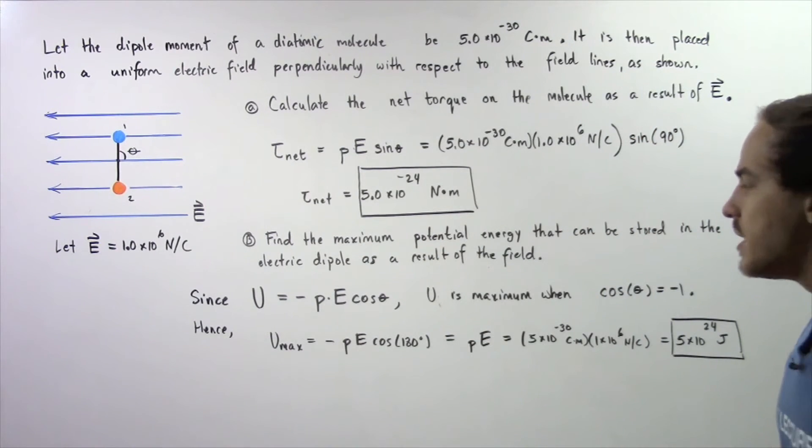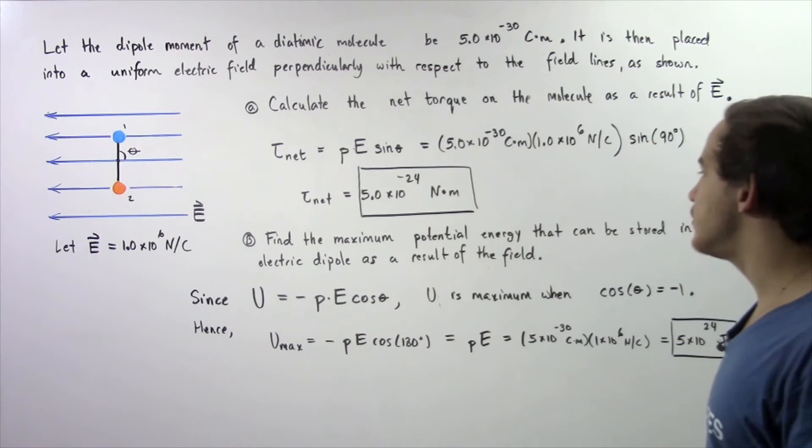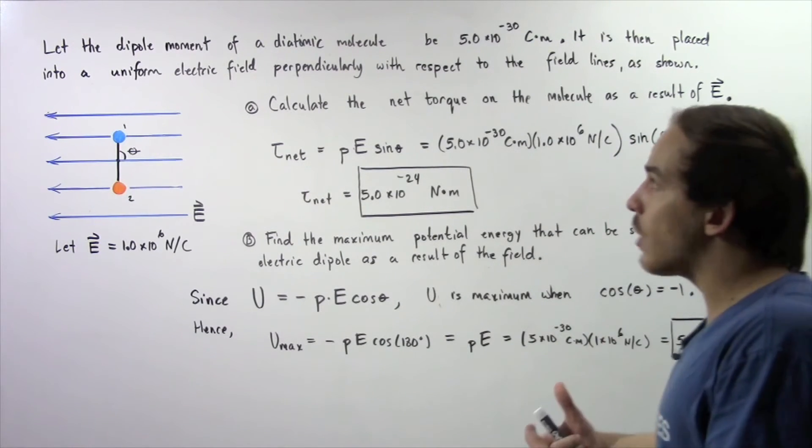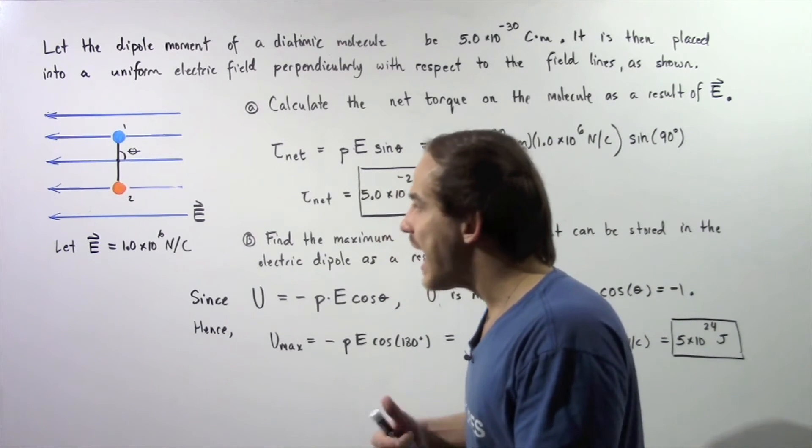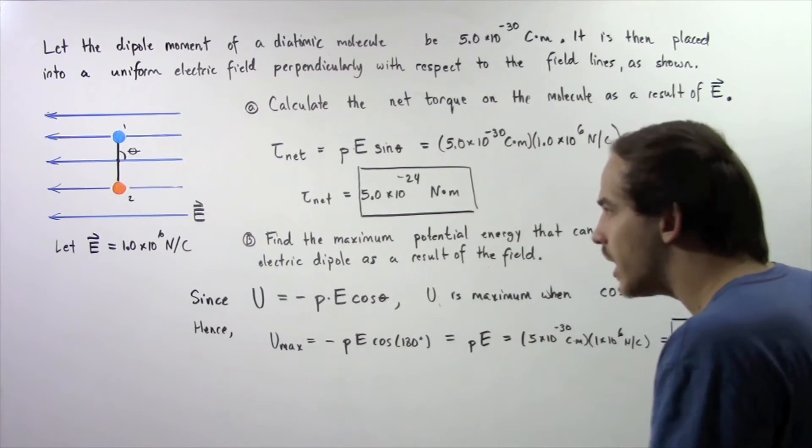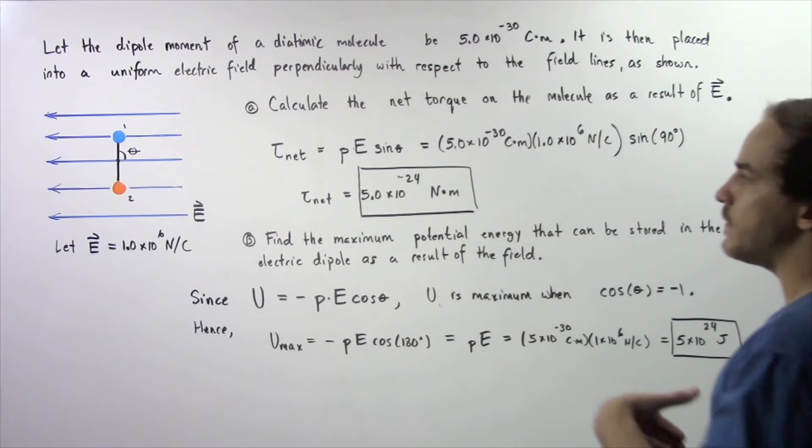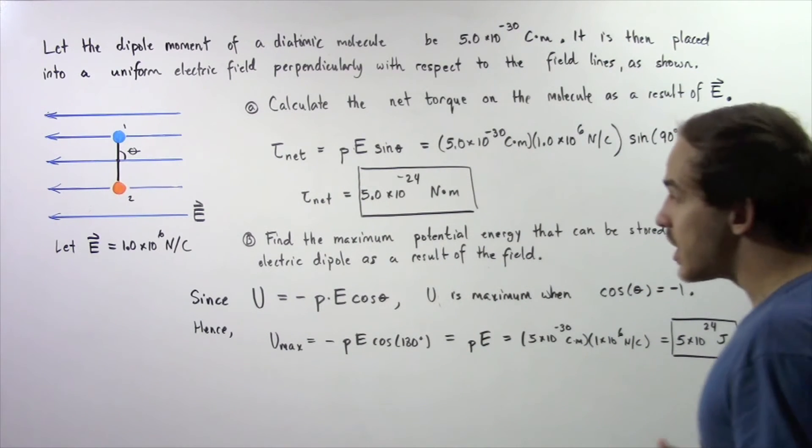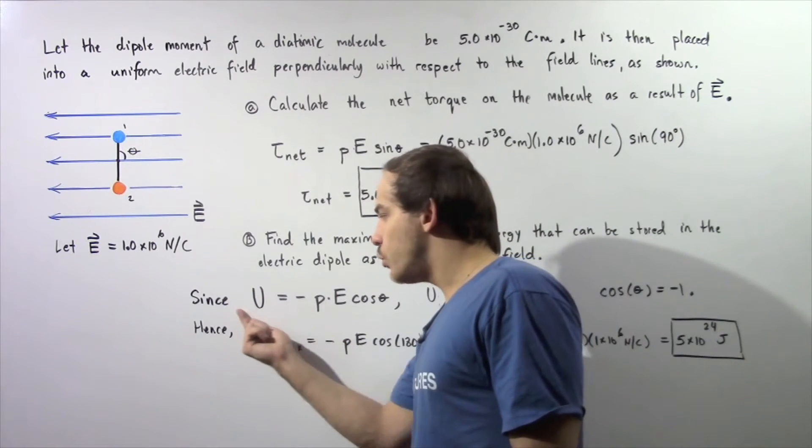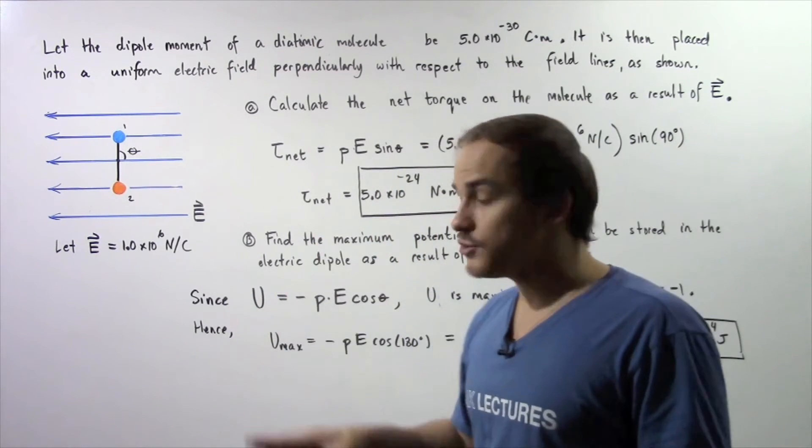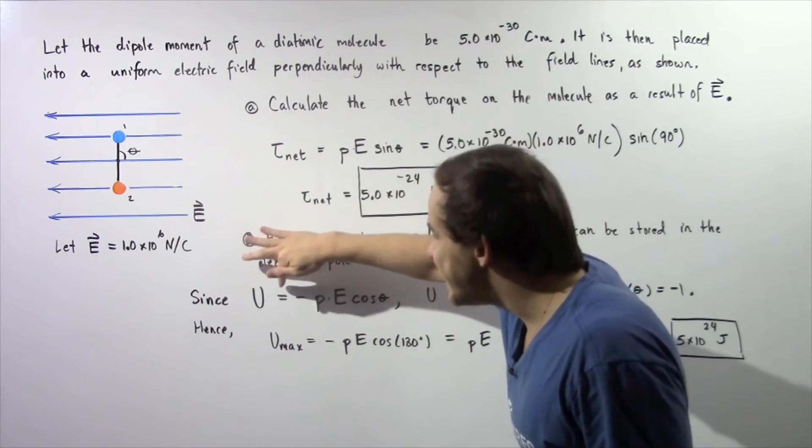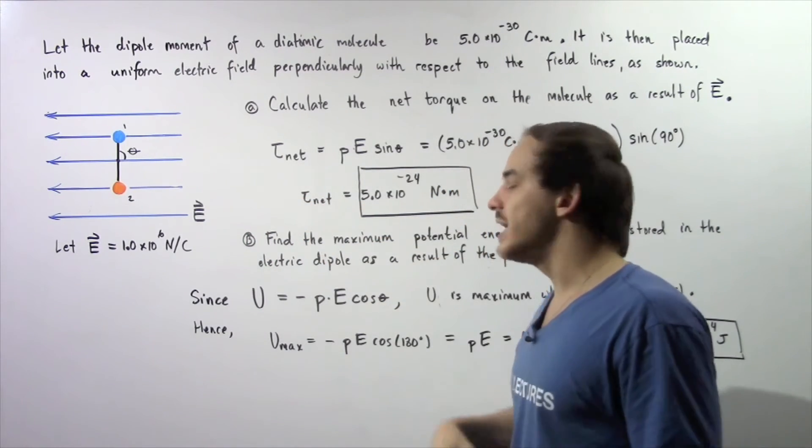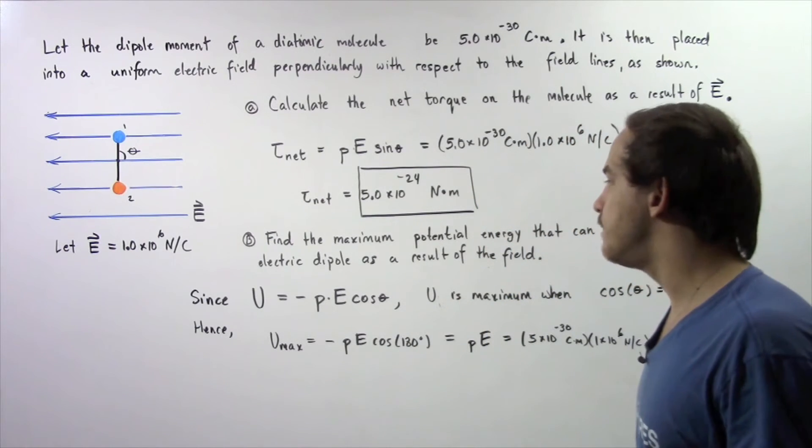Now let's move on to part B. Find the maximum potential energy that can be transferred into our electric dipole as a result of the work done by the electric field on our electric dipole. Recall that in the previous lecture we showed that the potential energy U is equal to negative P multiplied by E multiplied by the cosine of the angle theta.